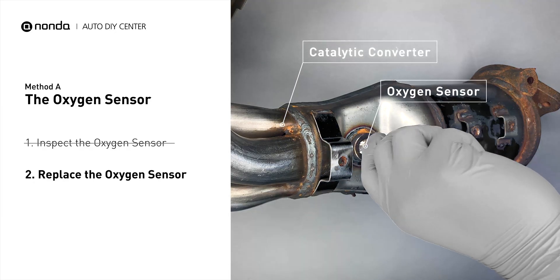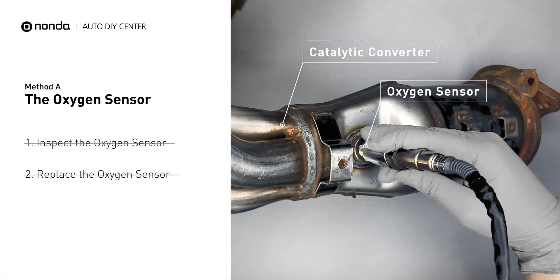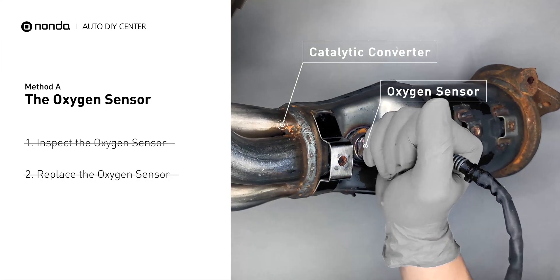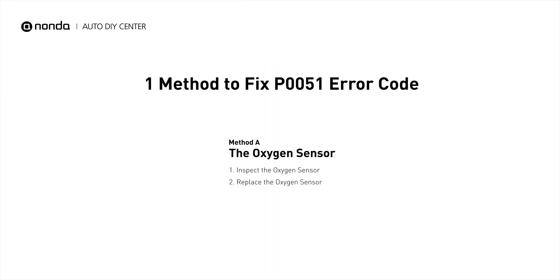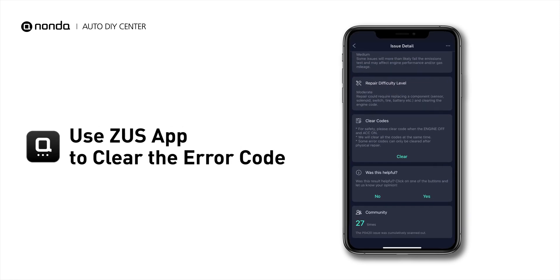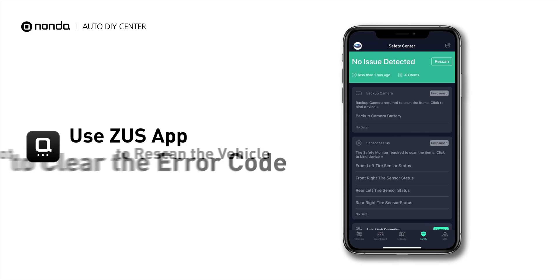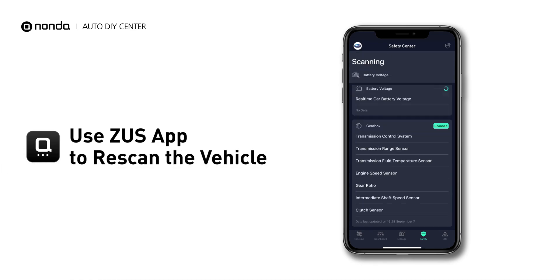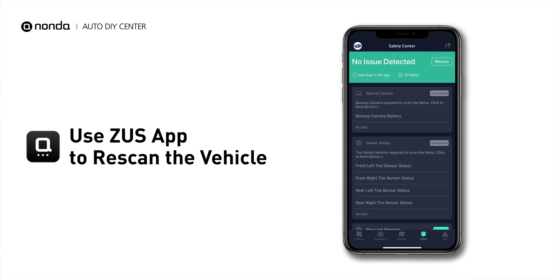If there is no damage found on the oxygen sensor, you would need to take your car to consult professional mechanics. Here is one of the most practical solutions to fix the P0051 error code. After the repair, you can now use the Zeus app to clear the error code, and tap the Rescan button one more time to make sure everything is fine with your vehicle.